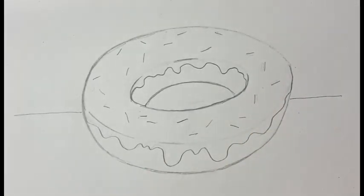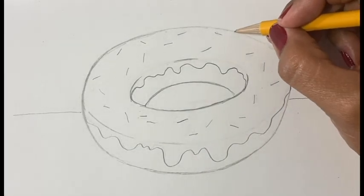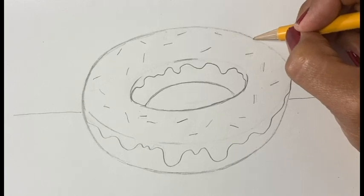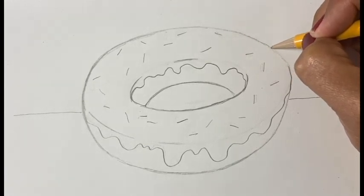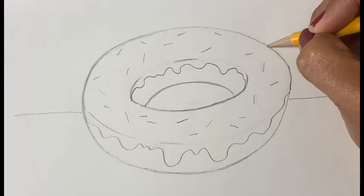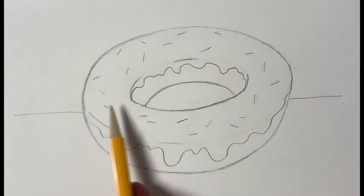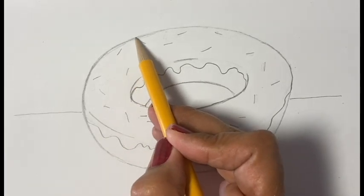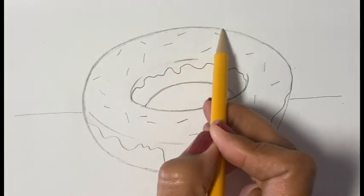And there it is, there is another one of those nice sprinkle donuts. So that one was a lot easier than the first one. The first one was from observation and I was trying to demonstrate my technique for drawing from observation.